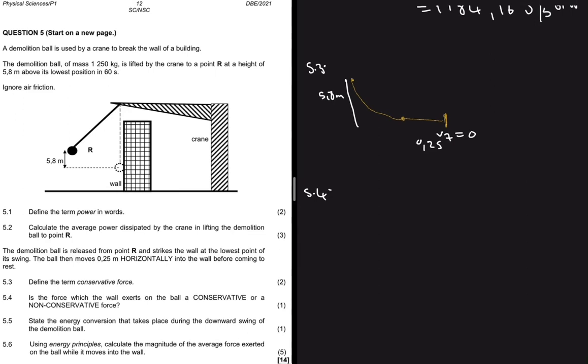Let's move to 5.5. State the energy conversion that takes place during the downward swing of the demolition ball. The downward swing is from R until it hits the wall, and then they say we should ignore friction.